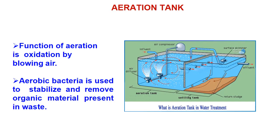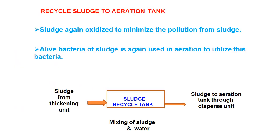The function of aeration is oxidation by blowing air. Aerobic bacteria are used to stabilize and remove organic material present in waste. In the wastewater there are large amounts of organic material which must be broken down and digested by bacteria under aerobic conditions — that is the aerobic treatment in the aeration tank.